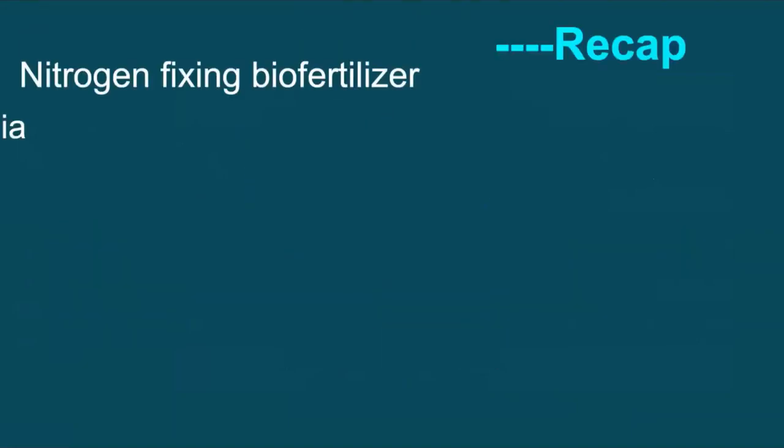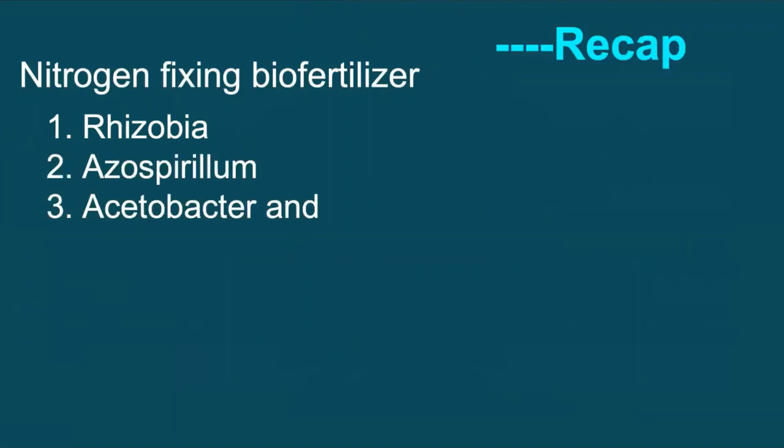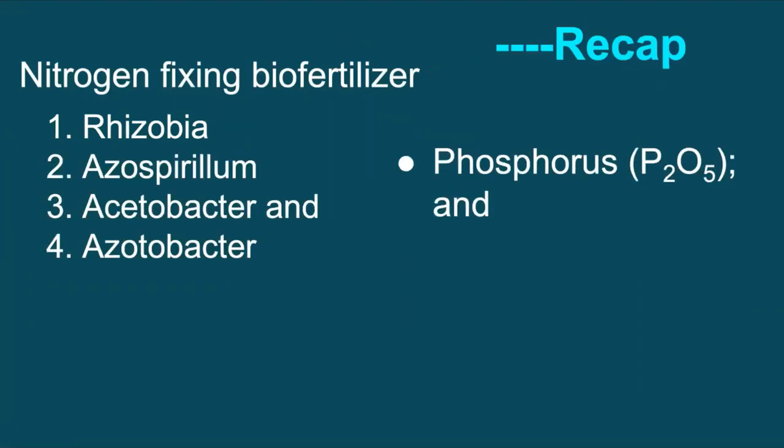Next to Nitrogen, Phosphorus in the form of Phosphate and Potash are the vital nutrients for crop products. Details about nutrients, their role and losses due to deficiency shall be discussed in the later episodes.